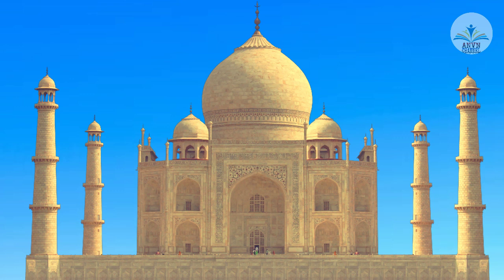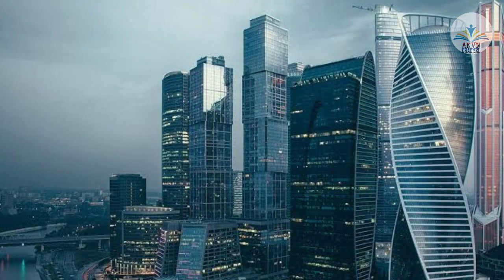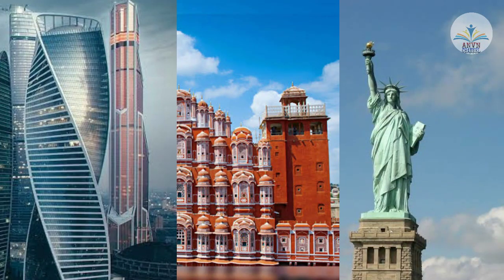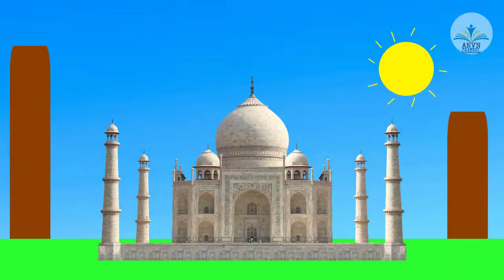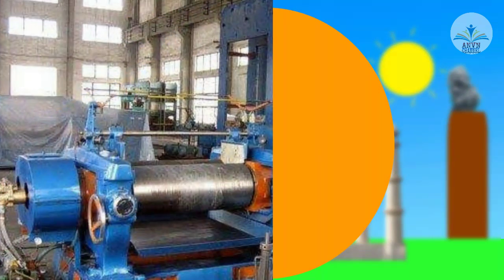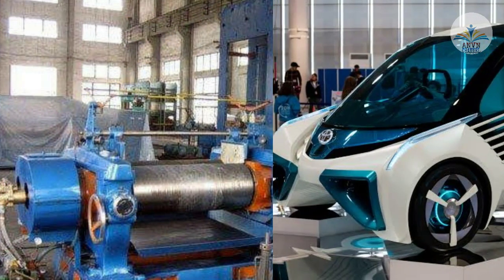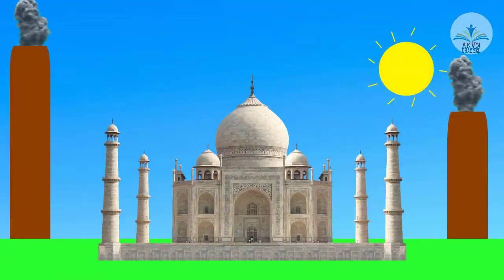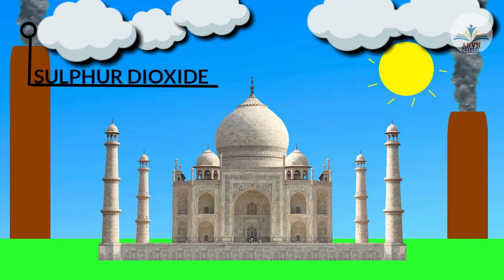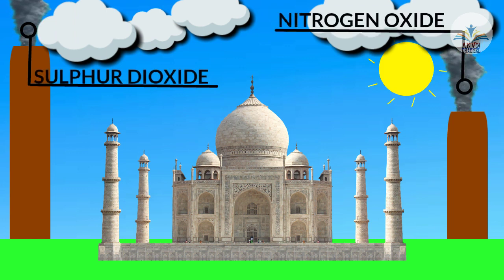So it is not only living organisms that get affected by polluted air, but non-living things like buildings, monuments, and statues also get affected. The industries located in and around Agra — like rubber processing, automobile, and chemicals — pump out various harmful gases like sulfur dioxide and nitrogen oxide.